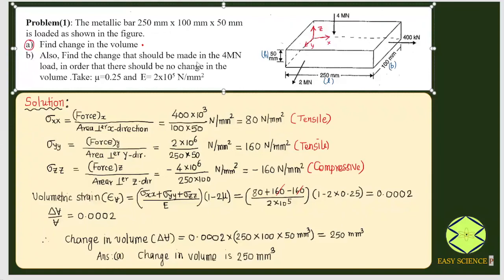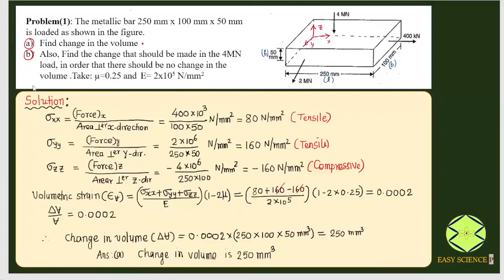Part 2 asks: find the change that should be made in the 4 MN load in order that there should be no change in volume. When volume change is zero, volumetric strain must be zero — because volumetric strain is change in volume divided by original volume. So if volumetric strain is zero, the whole quantity (σxx + σyy + σzz)/E × (1 − 2μ) must be zero.